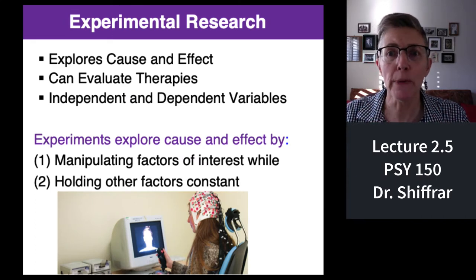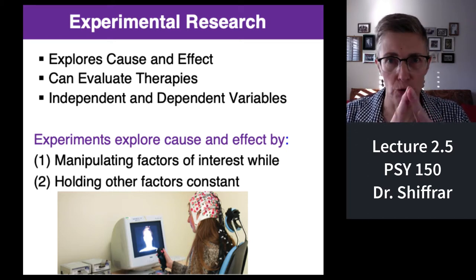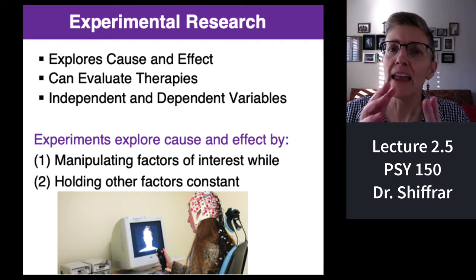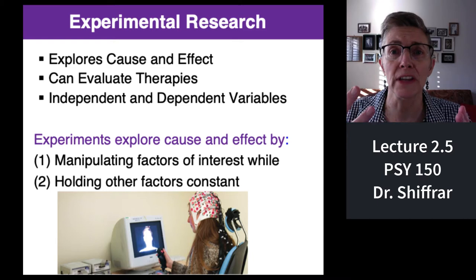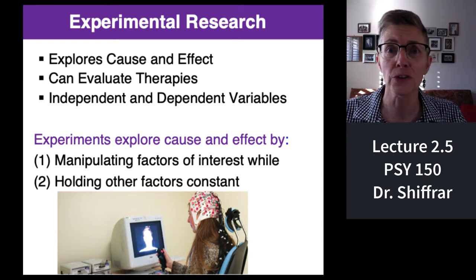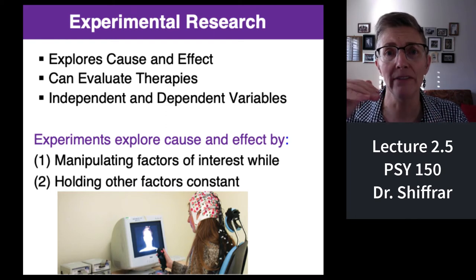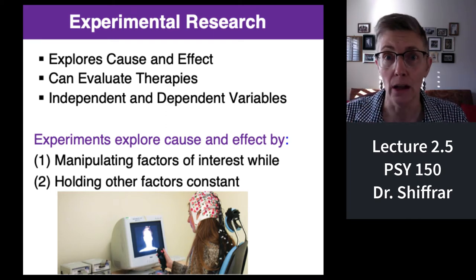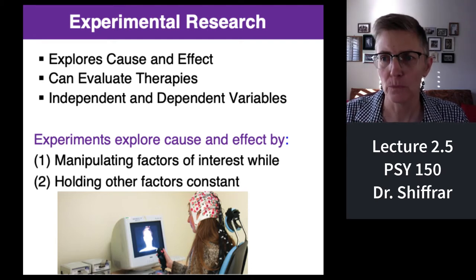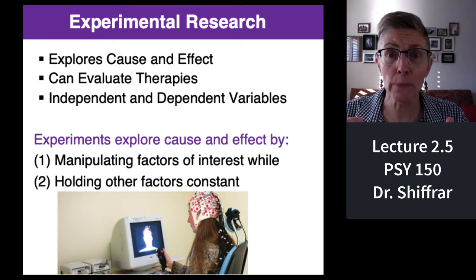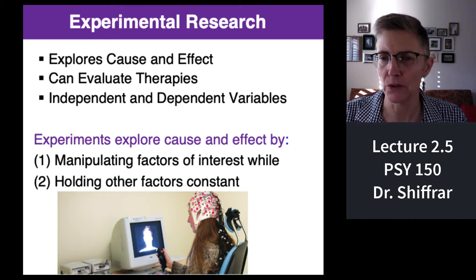Experimental research can explore cause and effect, which the previous methods can't do. It can be used to evaluate new therapies. For example, new vaccines are coming out for the COVID virus, and people are going to have to evaluate which vaccines work better than others, because obviously we only want the really good vaccines. And experiments involve independent and dependent variables, which we'll talk about in just a second.